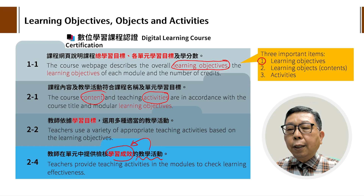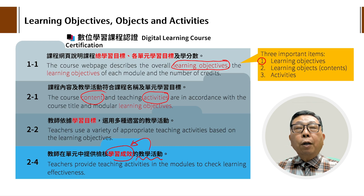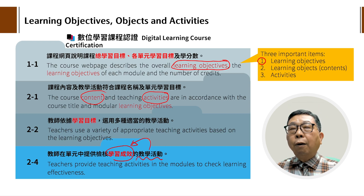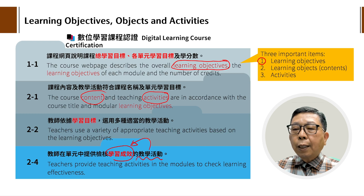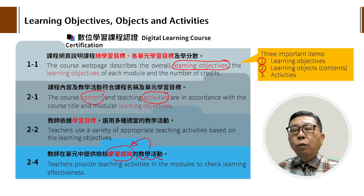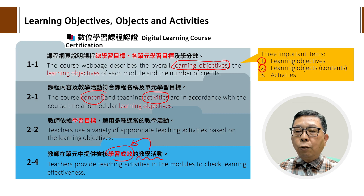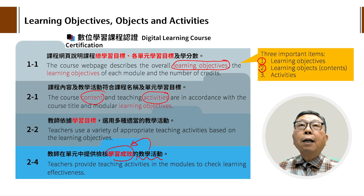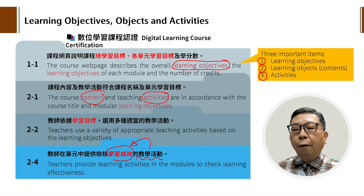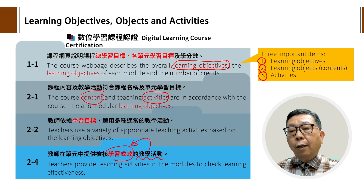所以这边我特别彰显出三个要注意的重点：第一件事情，你要先设计好的Learning objectives，就是这个学习目标，站在学生的角度来写。定好以后，你一定要设计好的教材；教材在数位学习里面就是原件、objects，或者说contents都可以。